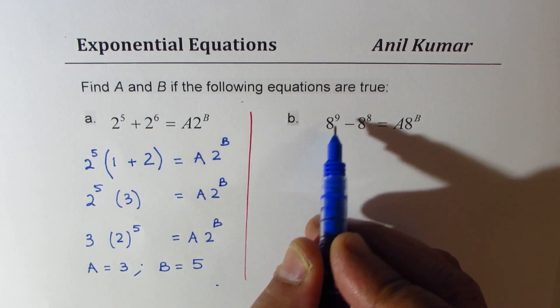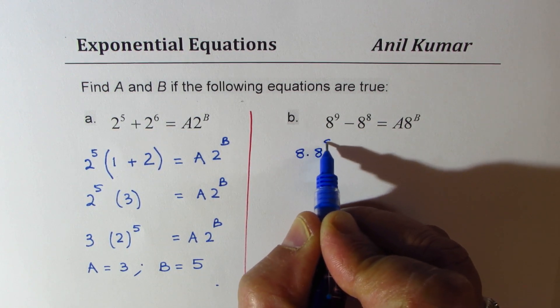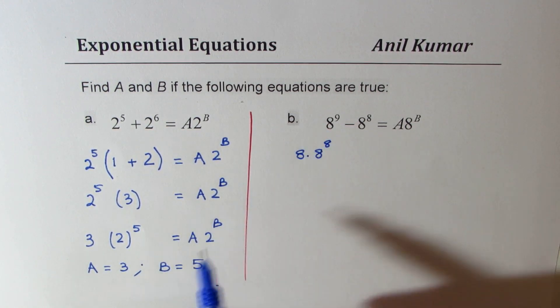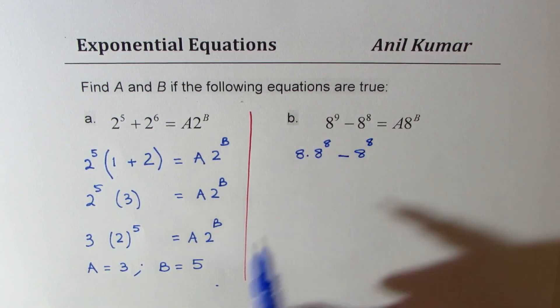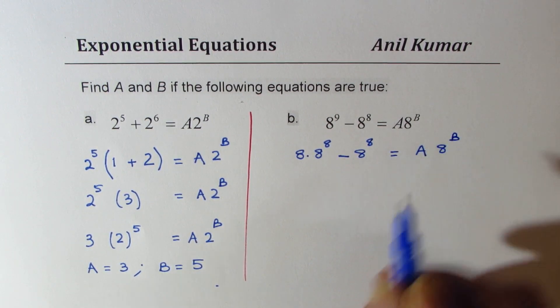8^9... Let me write this as 8 × 8^8. So that is 8^(8+1), which is 9. And we have minus 8^8. That should equal A × 8^B.